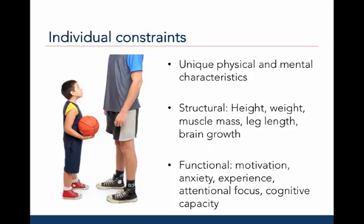Now let's talk about each type of constraint. Individual constraints are a person's unique physical and mental characteristics. There are two types of individual constraints. Structural constraints include factors such as height, weight, muscle mass, leg strength, and brain growth. We can think of these as an individual's physical characteristics.